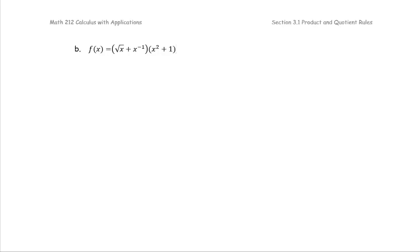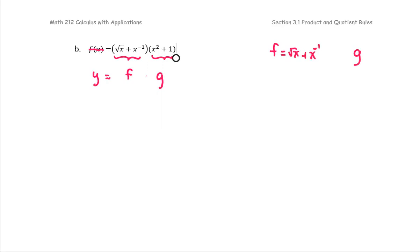For this example, we have f of x equals the product of square root x plus x to the negative first, and x squared plus one. For our convenience, I'm going to rename f of x as the function y and then treat it as the product of the function f and the function g. The function f for our case is square root x plus x to the negative first. Function g is x squared plus one.